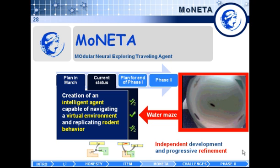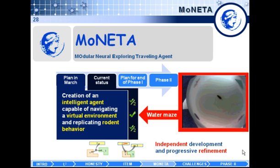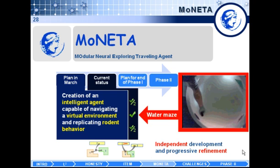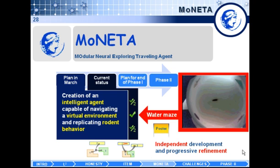We are approaching the development of Moneta through a divide and conquer strategy. We divide the whole brain system into subsystems, develop those subsystems independently, then reassemble them, and as subsystems become progressively more refined, we swap them in. I invite you to see the poster by Anatoly about Moneta.